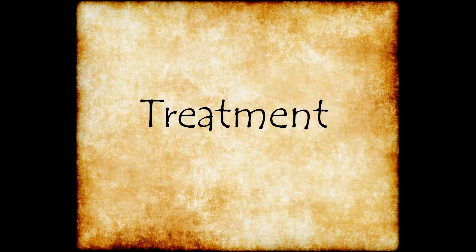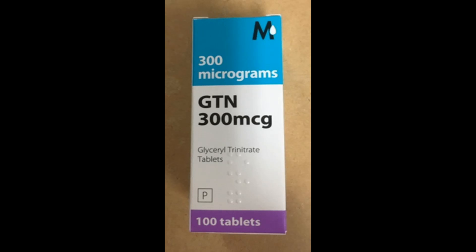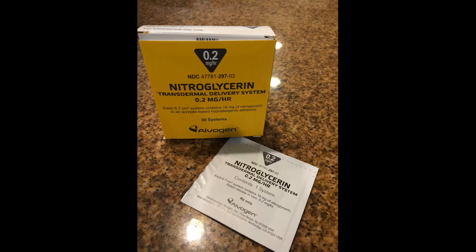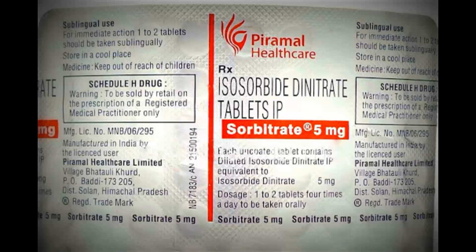Treatment — general management: patients should be reassured, and associated conditions such as anemia, hyperthyroidism, diabetes mellitus, hypertension, and hypercholesterolemia should be treated. Smoking should be completely stopped, and regular exercise with a low-fat diet should be followed. Medical treatment: glyceryl trinitrate is taken as tablet or spray; its peak action is seen at 4 to 8 minutes and lasts for 20 to 30 minutes. If relief is not obtained within 2 to 3 minutes, a second or third dose may be given at 5-minute intervals. Transdermal GTN preparations are also available with action lasting up to 24 hours. Long-acting nitrates like isosorbide dinitrate and mononitrate are used for long-term prophylactic therapy.